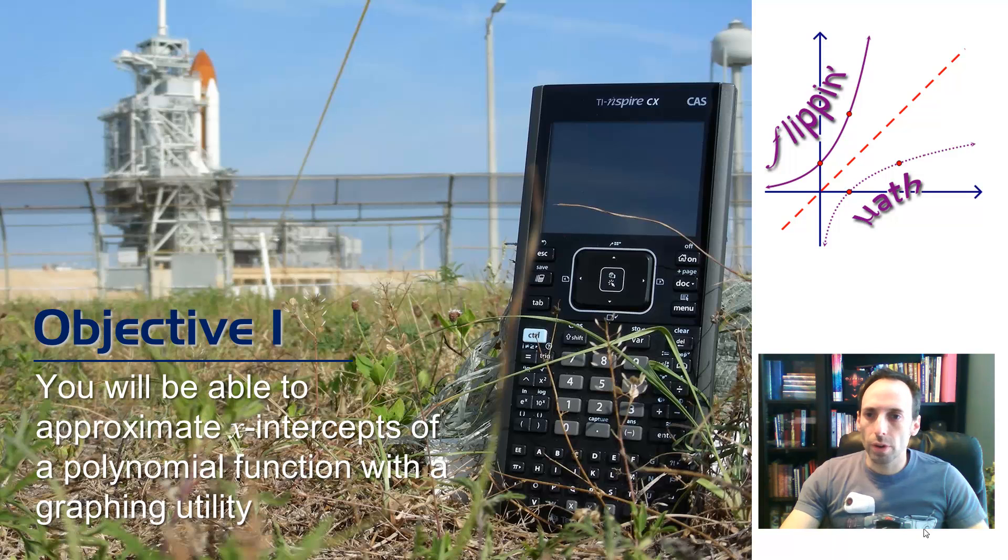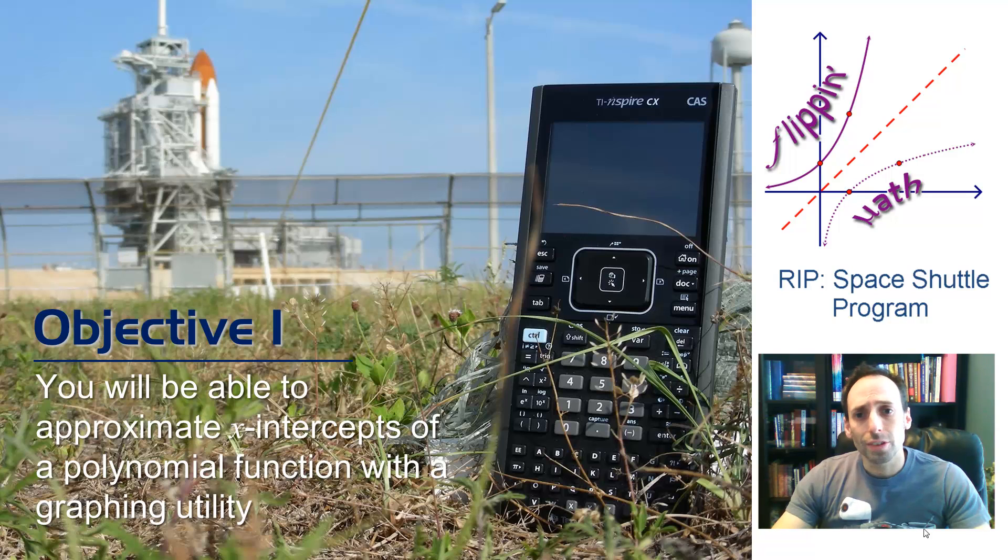And if you look in the background there, you see the space shuttle, and I thought this was a pretty appropriate picture for zeros, x-intercepts. So, if you think of the launch of a rocket, or you think of the launch of the space shuttle, an x-intercept or a zero would be where this thing is on the ground. And right now, currently, it's on the ground, and apparently it's always going to stay there since that program got canceled.